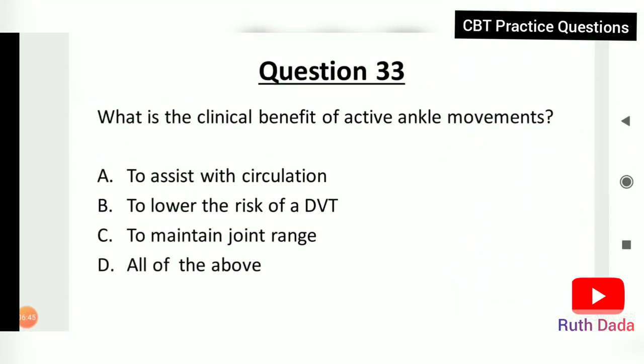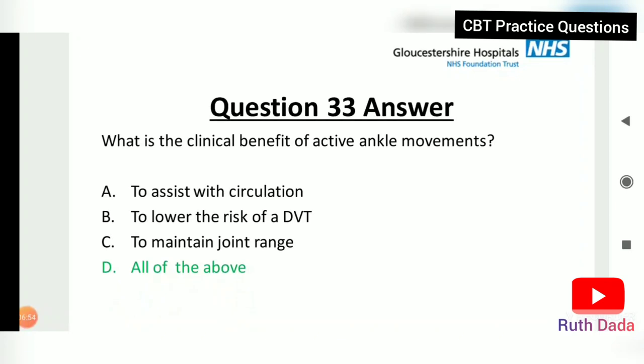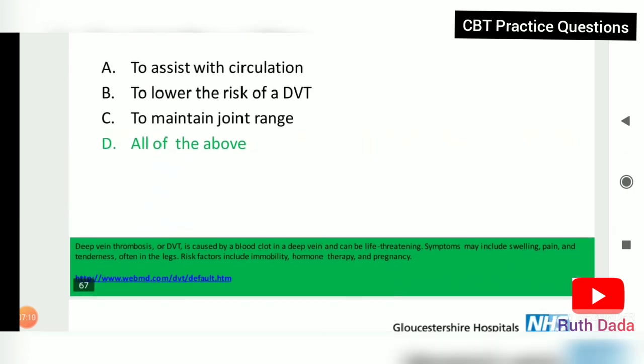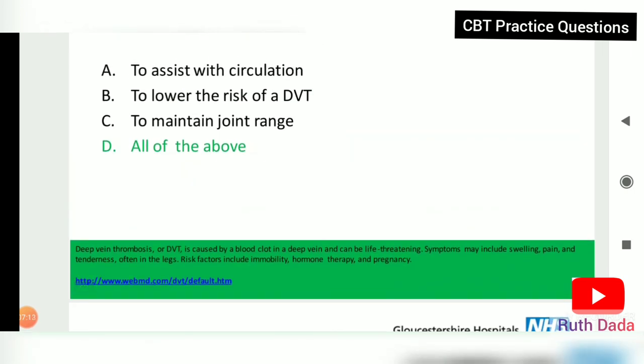Question 33: What is the clinical benefit of active ankle movements? Active ankle movements benefit circulation, lower the risk of DVT, and help maintain joint range of movement. Deep venous thrombosis (DVT) is caused by a blood clot in a deep vein and can be life-threatening. Symptoms may include swelling, pain, and tenderness, often in the legs. Risk factors include immobility, hormone therapy, and pregnancy.